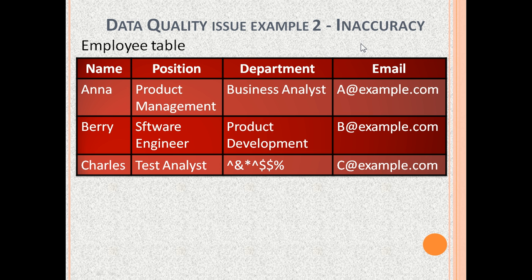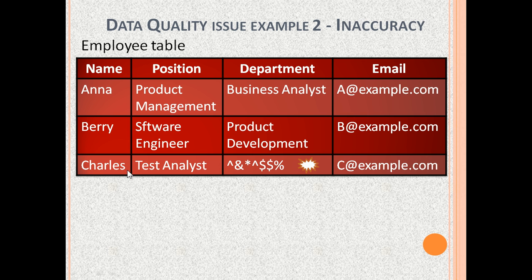The second data quality issue is inaccuracy. Here is the employee table with columns: name, position, department and email. Anna's position and department are interchanged. Barry's position has a typo in 'software'. Charles's department has a junk value.